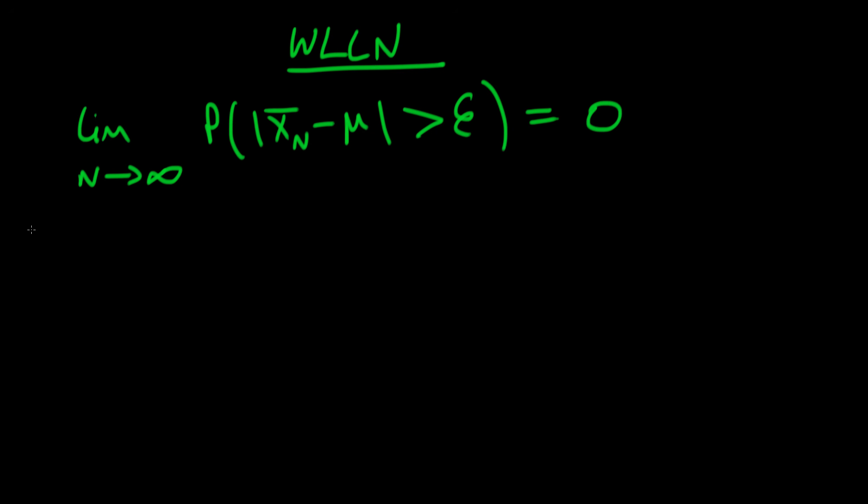Okay, so what does this actually mean intuitively? Well, it means that I have some sort of population, but I only have in reality a sample from that population, and within that sample I calculate the sample mean x̄ₙ.